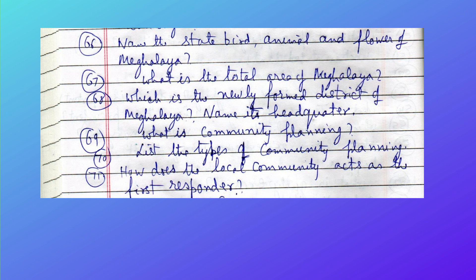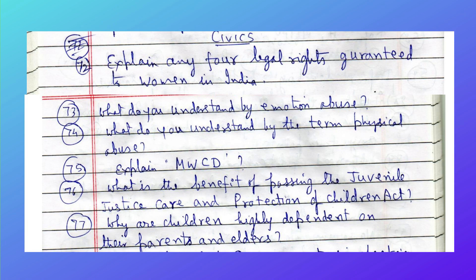Now we move to Civics questions. Explain any four legal rights guaranteed to women in India. What do you understand by emotional abuse and by the term physical abuse? Explain MWCD and what is the benefit of passing the Juvenile Justice (Care and Protection of Children) Act?